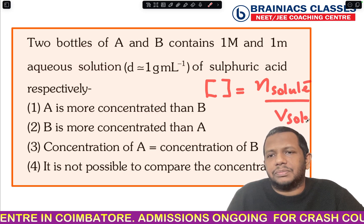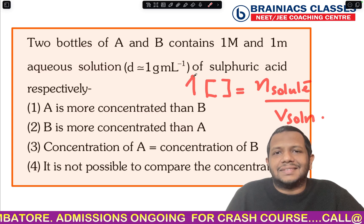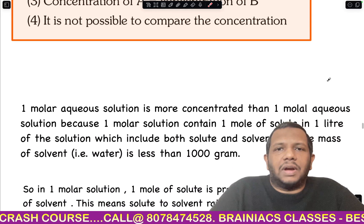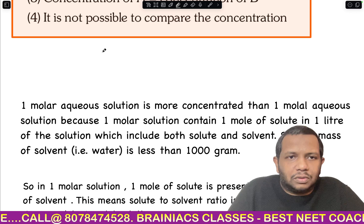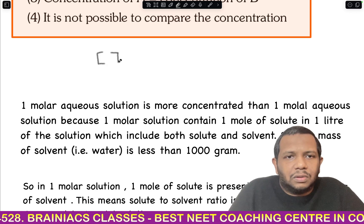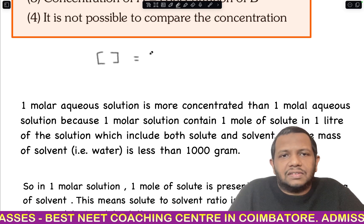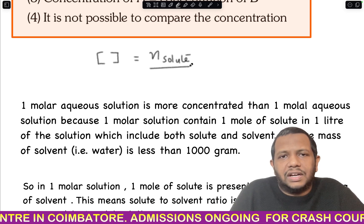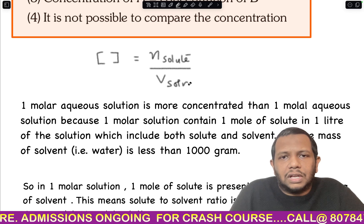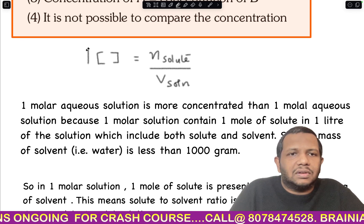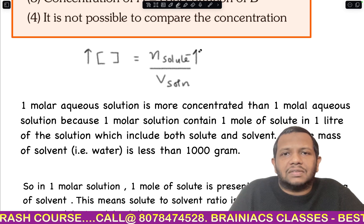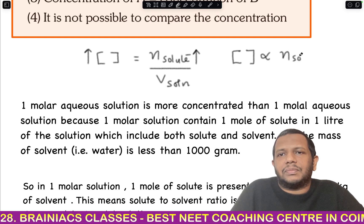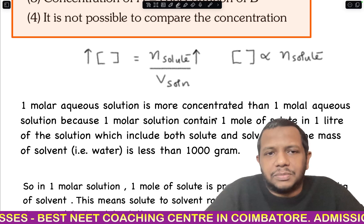Concentration increases when the number of moles of solute increases, since they are directly proportional — moles of solute is in the numerator. So: [concentration] = moles of solute ÷ volume of solution. If the number of moles of solute increases, concentration increases.